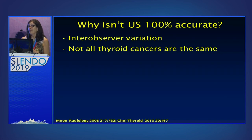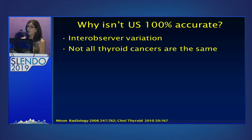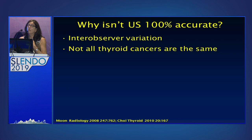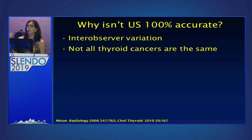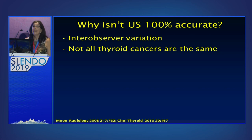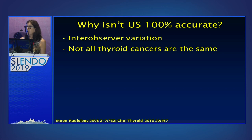So why isn't ultrasound 100% accurate? First of all, our eyes see the same things and often assign different words to them. It's been shown that the more experienced the ultrasound operator is, the less the variation. But most ultrasounds around the world are read by people who don't just read ultrasound — they're reading ultrasound and mammography and CT and MR. Just as in surgery, the more procedures you do the lower your complication rate, the more thyroid ultrasounds you do the better your consistency is. And not all cancers are the same — some cancers form follicles under the microscope, like PTC follicular variant and follicular carcinoma, and those are going to image differently than tall cell papillary cancers or classic papillary cancers.